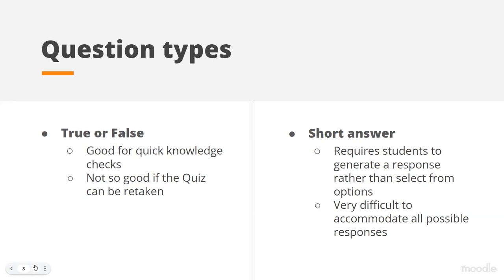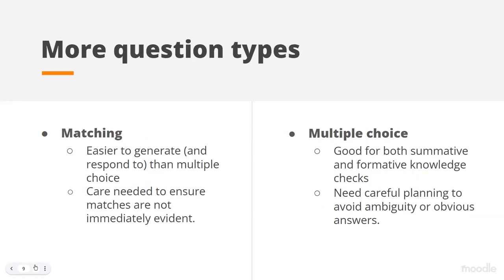Going up our chart of popular question types, we come to the matching question type. As I was reading around this subject, I learned that as well as being easier for teachers to create — because you're basically splitting a statement into two halves, unlike multiple choice where you have to think of incorrect possible answers — it's apparently also easier for students to answer; they like matching questions. But that doesn't mean you can do it quickly without thinking. You need to ensure that it's not obvious which matches which, and also that it's not ambiguous — that there aren't two possible answers when you will only accept one. You really need to read it through and ask someone to check it.